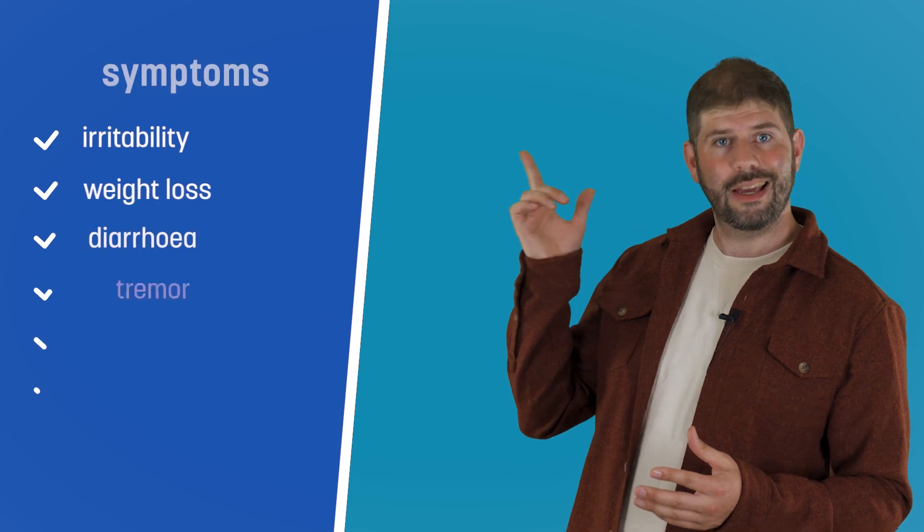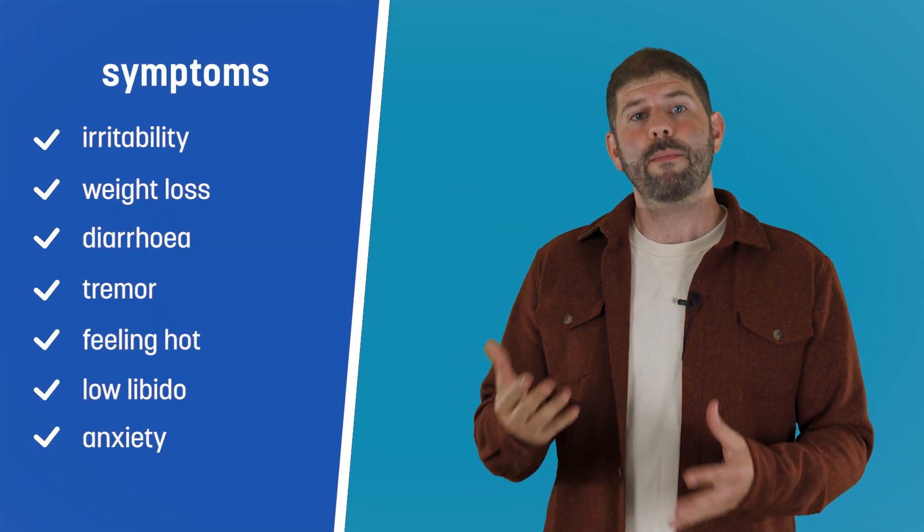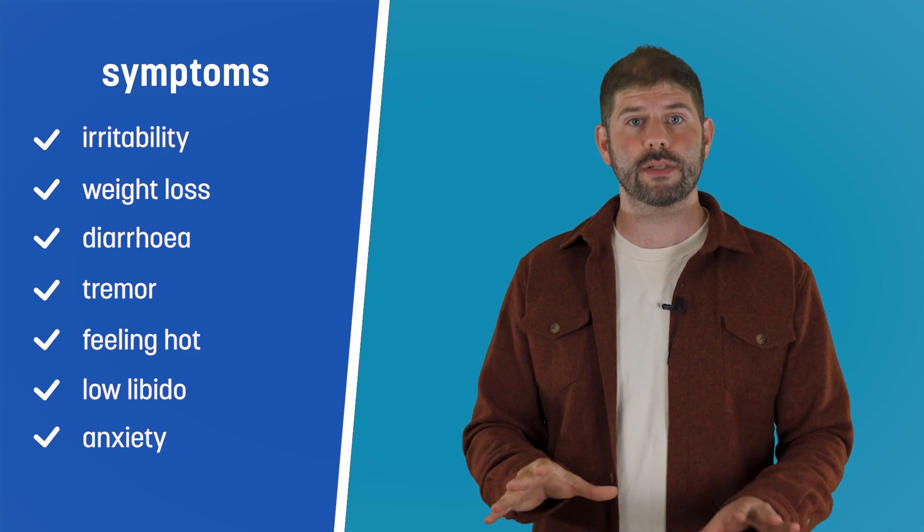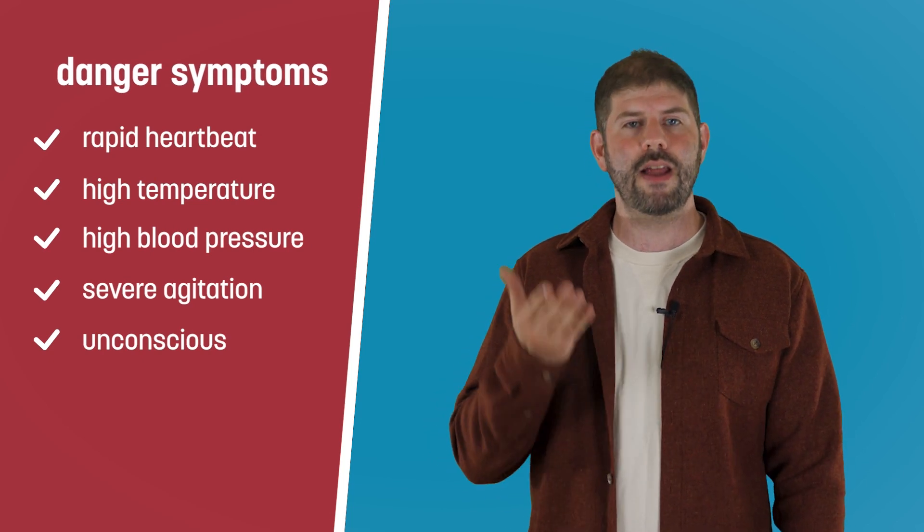You can see some of the more common overactive symptoms here. If left untreated, it can lead to a lot of those symptoms, but when it's very overactive it can be really serious and sometimes a medical emergency, causing dangerous things like heart arrhythmias and very high blood pressures. You can treat an overactive thyroid in three main ways.